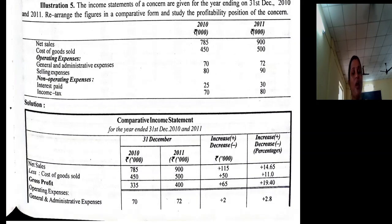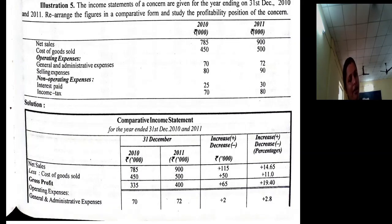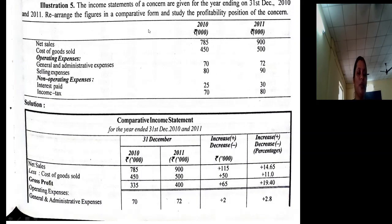They have not clearly stated that we need to prepare a comparative income statement — just to re-arrange the figures in comparative form. As the figures are relating to the income statement, what we are preparing? We are preparing a comparative income statement. Just look at the way in which data are given in the problem.